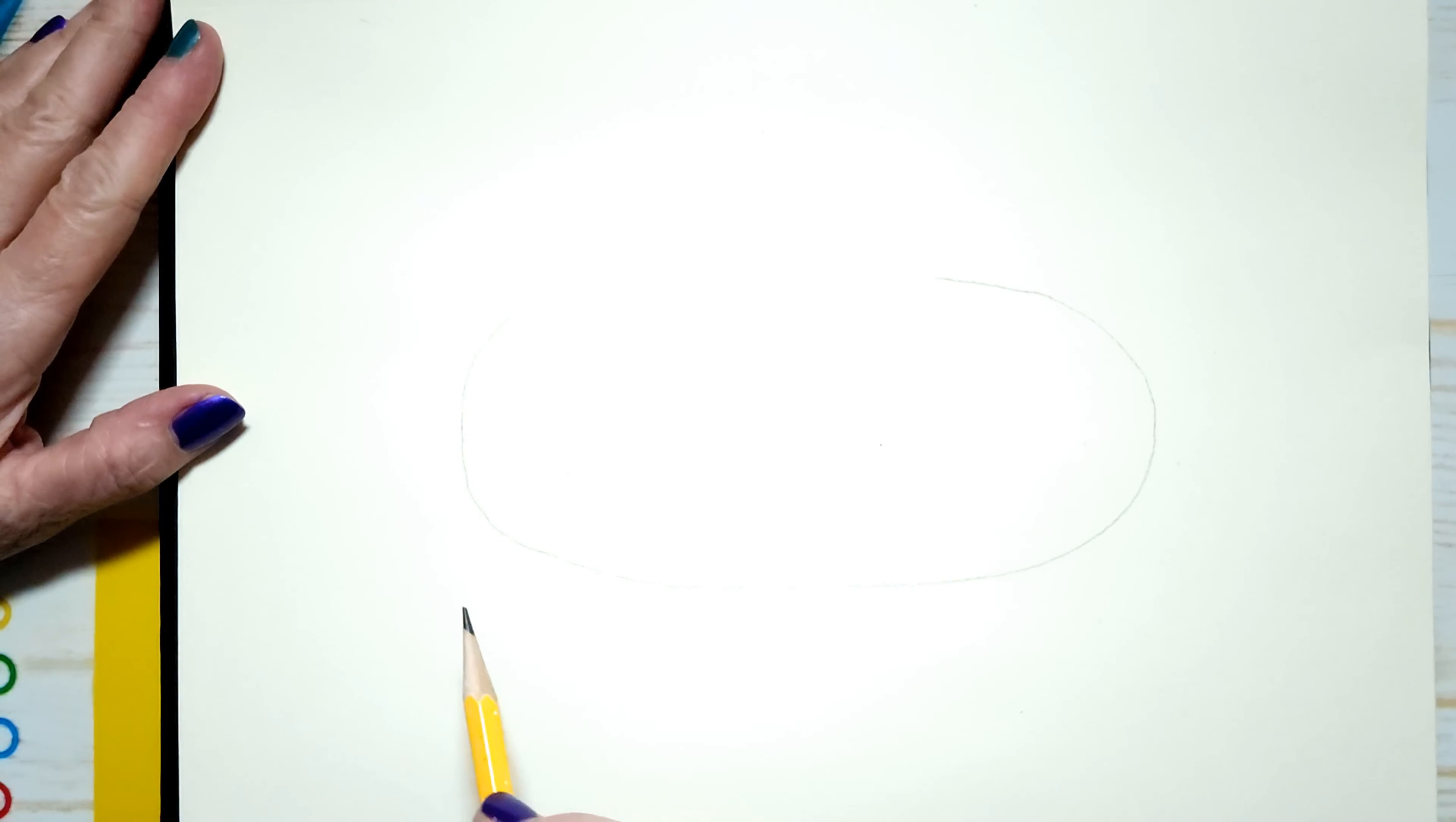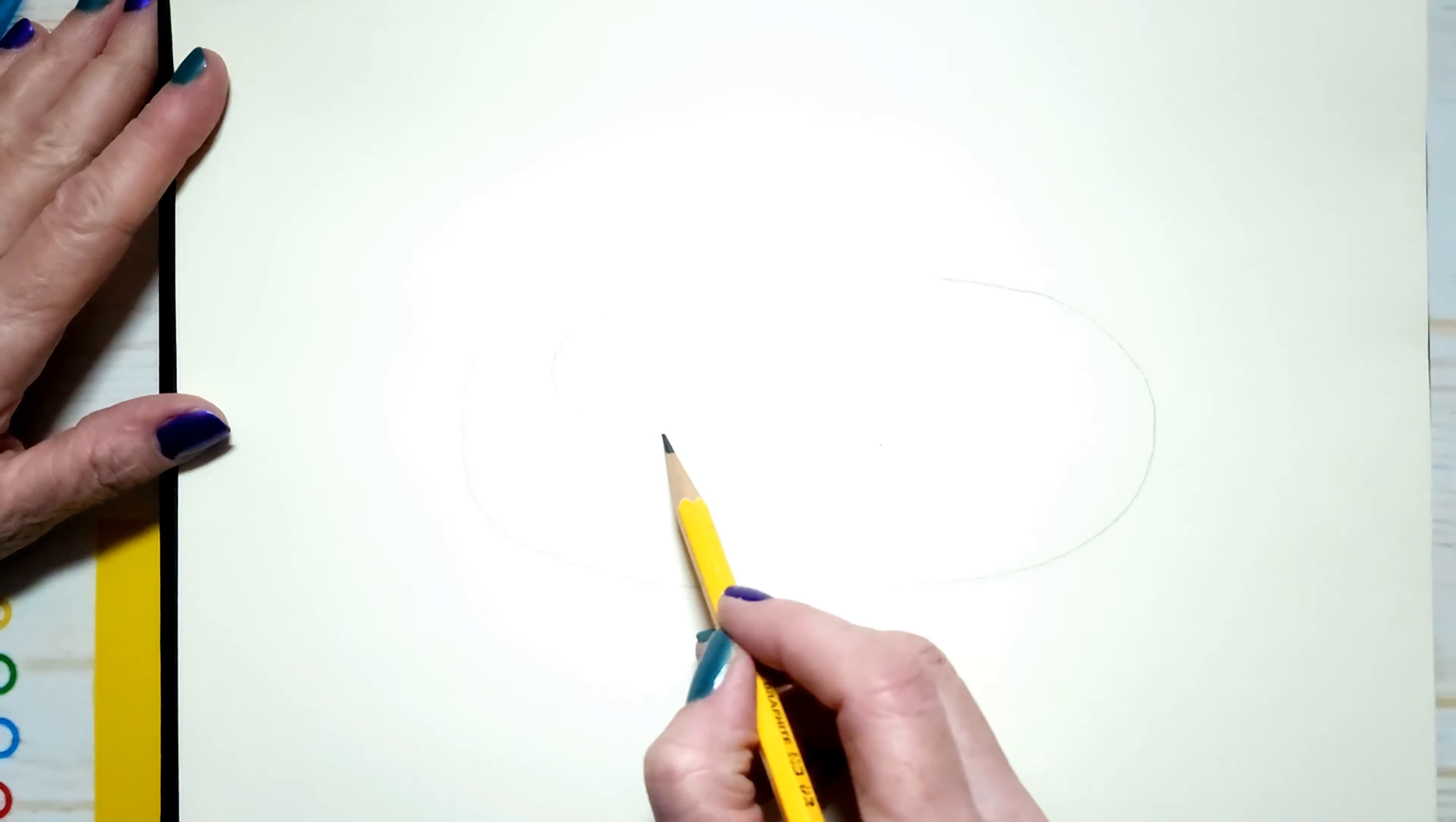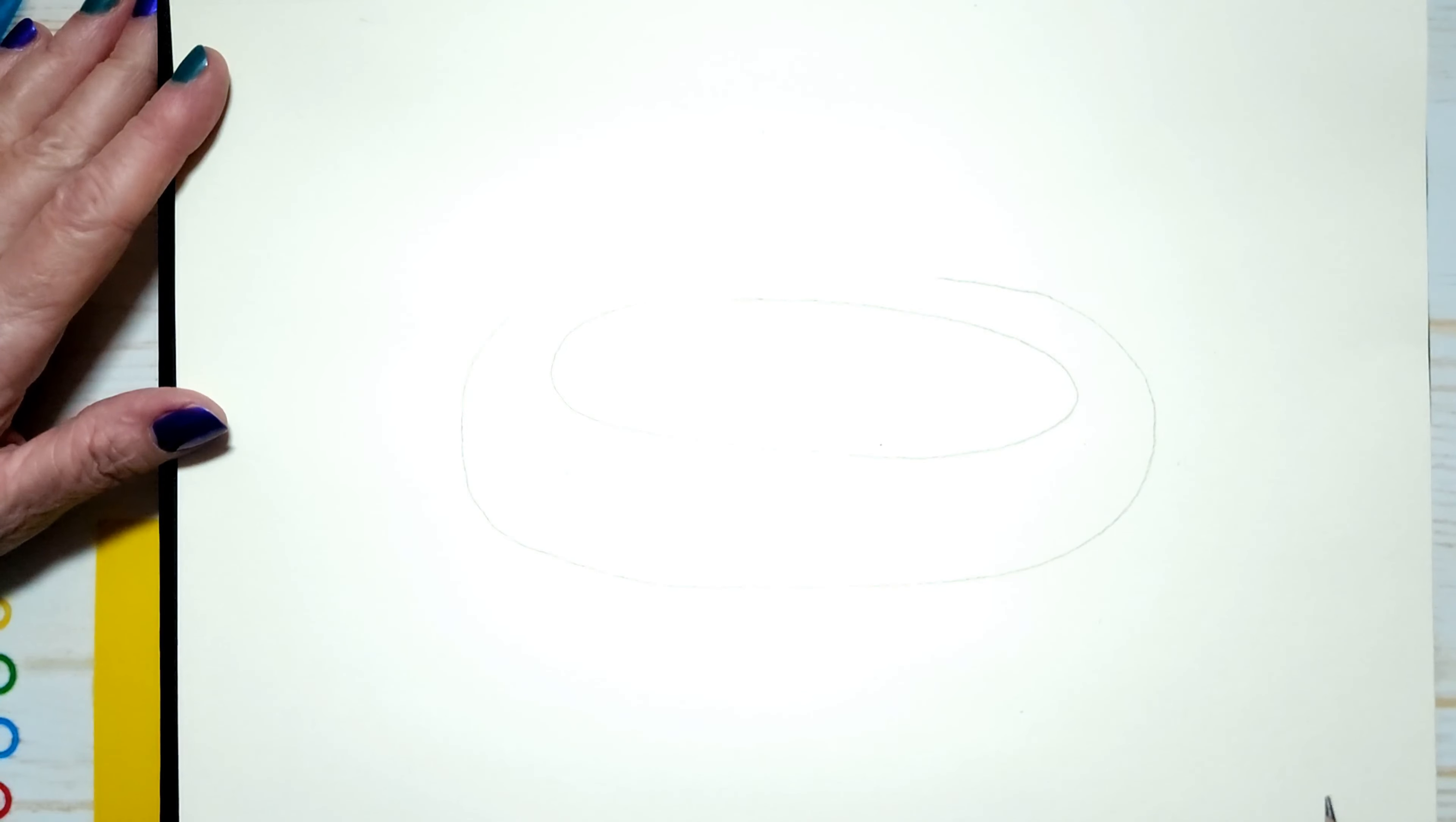I'm just going to draw a rough shape of a nest, just a very rough shape. I hope you can see that with my bright lights. And a little round area in the middle. That is the rough shape of my nest.